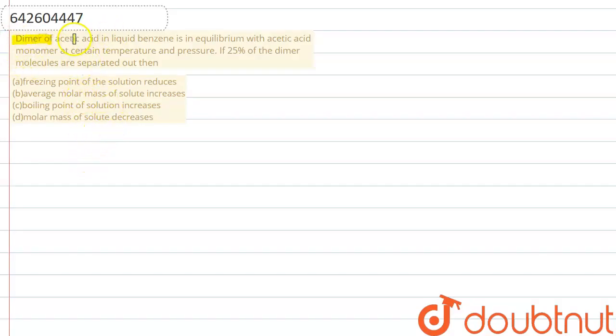Let me explain this to you. Dimer of acetic acid in liquid benzene is in equilibrium with acetic acid monomer at certain temperature and pressure. If 25 percent of the dimer molecules are separated out, then which of the following is a correct statement?